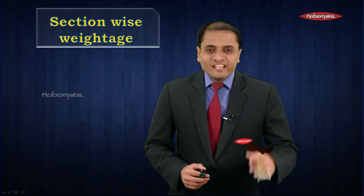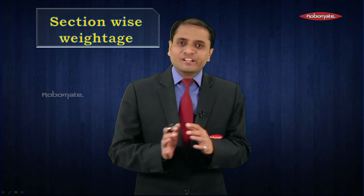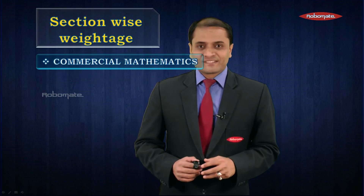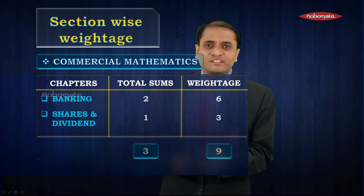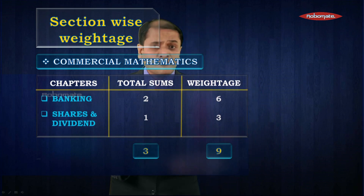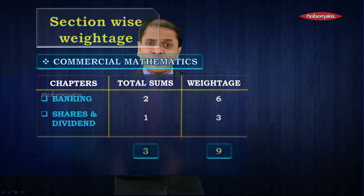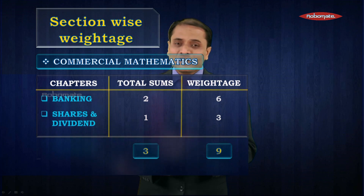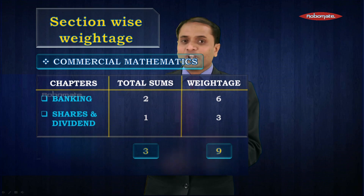Let us begin with the first part of our discussion — section-wise weightage. We have divided the chapters into different sections. The first section is commercial mathematics, which includes banking and shares and dividend. As shown in this table, you can expect around three questions from this section — two from banking and one from shares and dividend. The total weightage of these three questions is nine marks. Now let us see what the important types of questions are, which are frequently asked in board exams from this section.